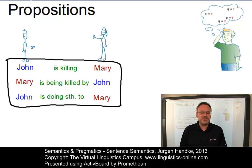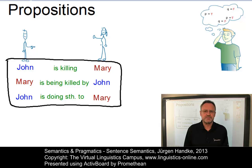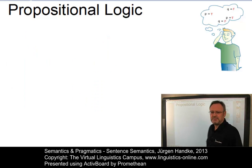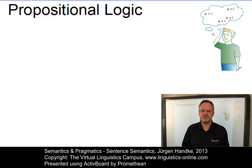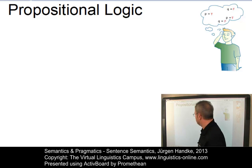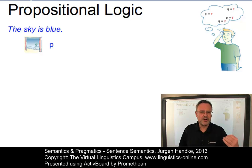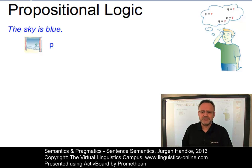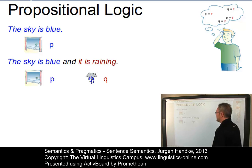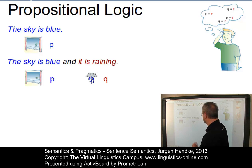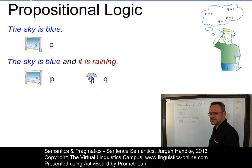Let us see how we can formalize sentence meaning in terms of propositions and how the machinery of propositional logic works. A proposition can be defined as the basic semantic content of a sentence or, in more philosophical terms, what a sentence says about the world. Propositions are labeled with small letters from P, which stands for the initial letter of proposition, upwards. So, if you have one proposition only, it is always labeled P. If you have two propositions, like in the sentence 'the sky is blue and it is raining', then we would have P and Q.